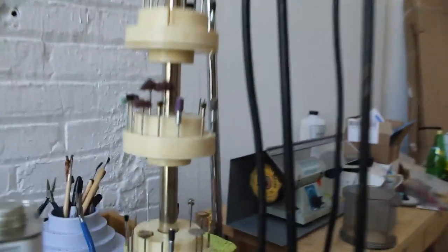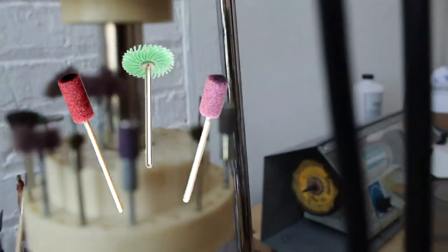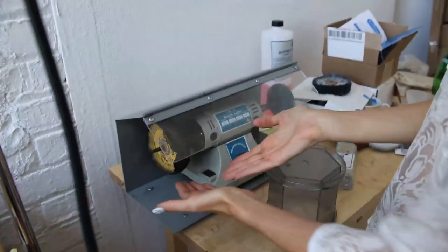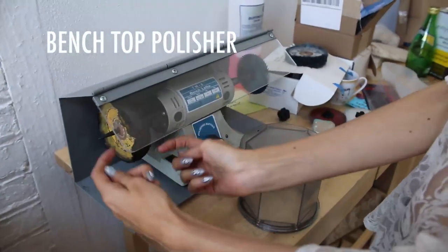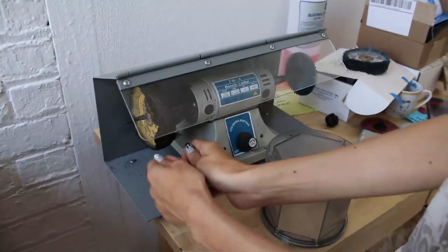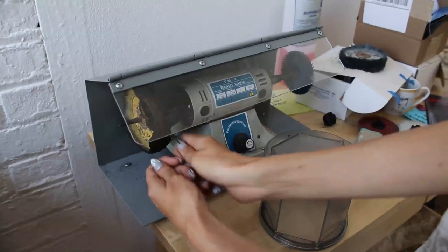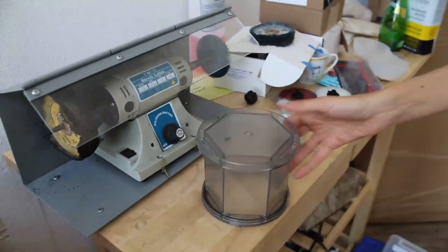And when you want to make your jewelry super shiny and wonderful, use this guy. It spins and you hold it under here and get it just as shiny as you want.